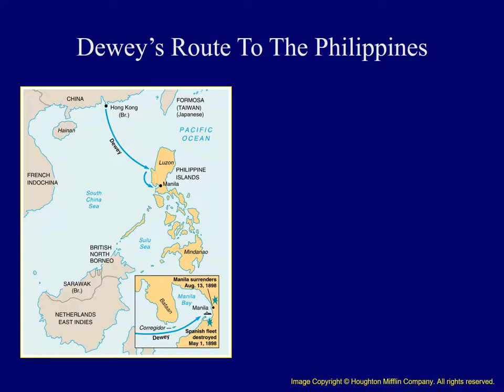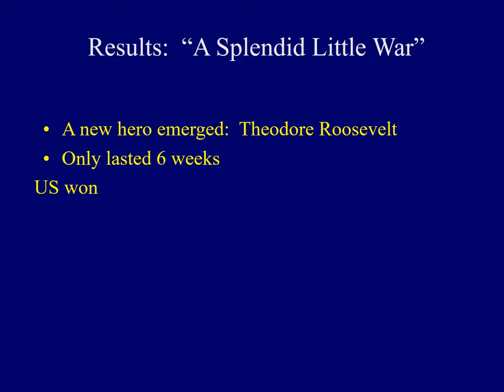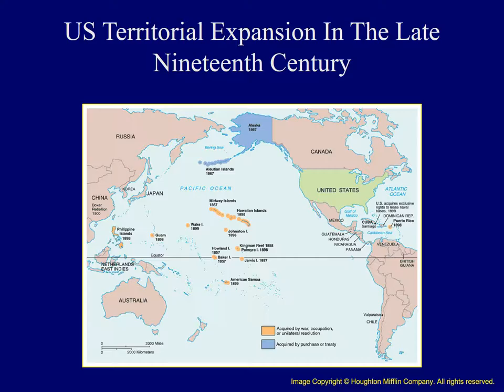Combat took place in both the Philippines and Cuba. Under the direction of Admiral Dewey in May of 1898, U.S. forces steamed into Manila Bay and either captured or destroyed all 10 Spanish ships at the cost of only one American life. U.S. troops then occupied Manila by mid-August. In the words of John Hay, this was a splendid little war. A new hero had emerged — Theodore Roosevelt — who had led a volunteer group of forces to victory at San Juan Hill. The war itself only lasted six weeks. The Americans won and, as a result, the United States had acquired a vast overseas empire.